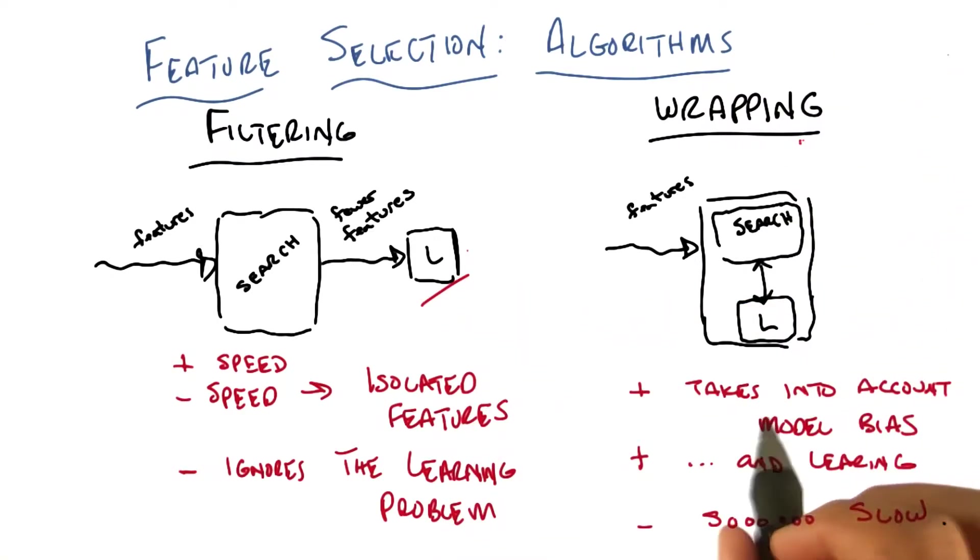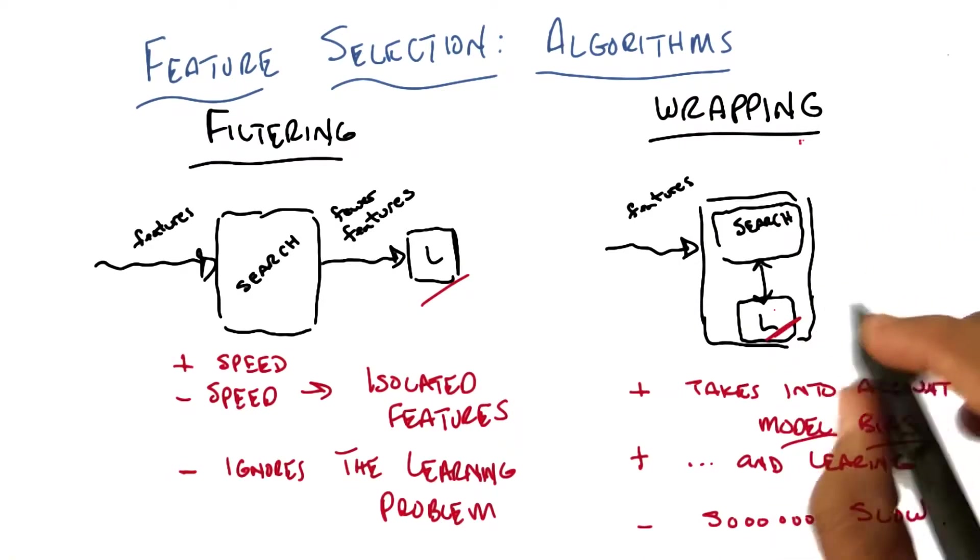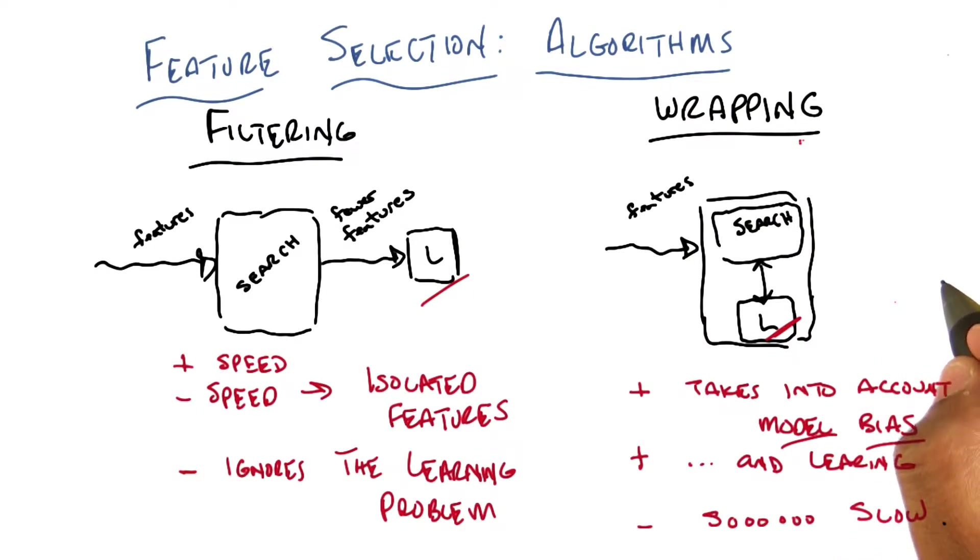By contrast, wrapping actually takes into account model bias. It takes into account whatever the learning bias of the learning algorithm is in order to determine what the best sub features are. Which means it's actually worried about the problem of learning itself.